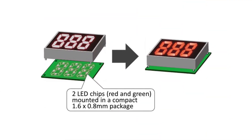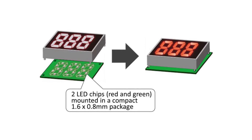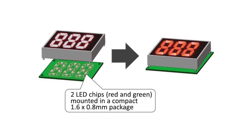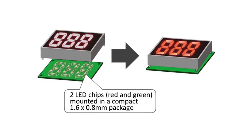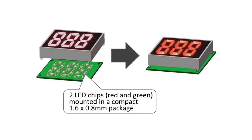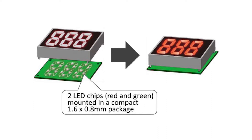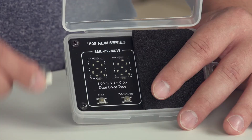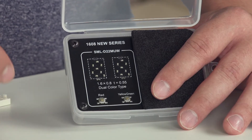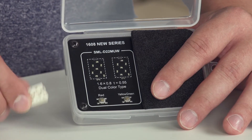They're a standard 0603, or if you're in metric, a 1608 package. They're 0.5 millimeters thick, so they will fit inside the standard light guide.